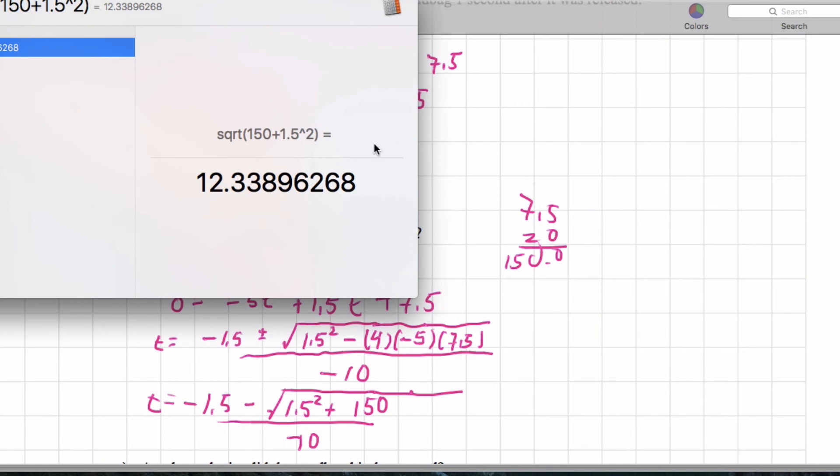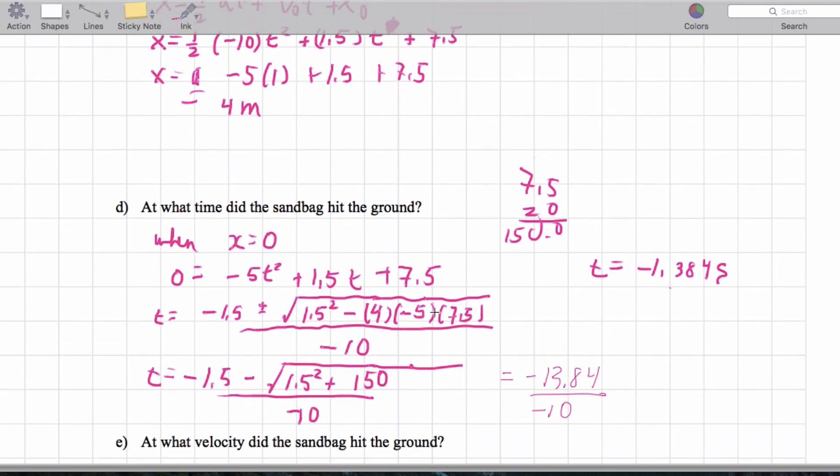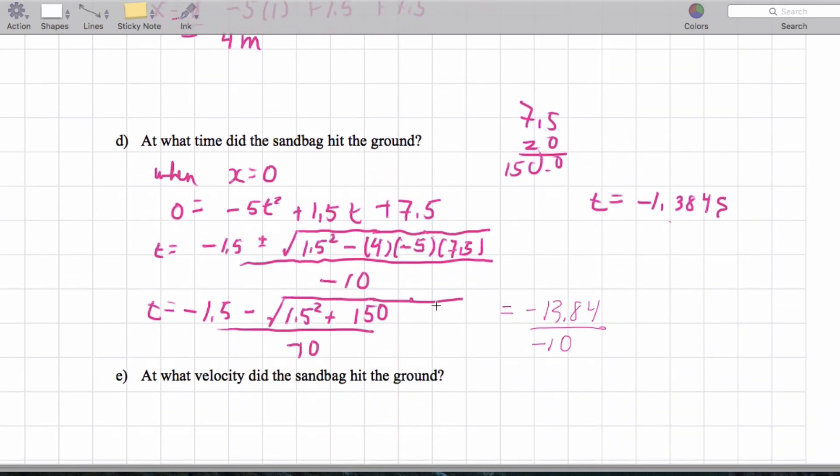So let's just multiply that out really quickly. The square root of 150 plus 1.5 quantity squared is going to give me 12.33. And we're going to add 1.5 to that. So I'm getting 13.84. So negative 13.84 divided by negative 10. So the time I'm getting is 1.384 seconds, which you can check by putting in this formula here. You won't get exactly zero, but it should round pretty close to zero.